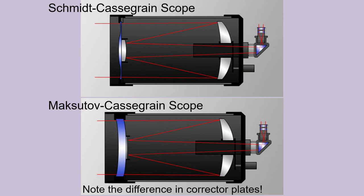Here are cutaway views of a Schmidt-Cassegrain scope and a MAK scope for comparison. The curves in the Schmidt corrector plate are exaggerated in this diagram so you can get a sense of its actual shape — to look at one, you'd just perceive it as being flat. The much thicker corrector plate in the MAK scope becomes a problem for larger apertures, not only because of how heavy it is, but also because of the way it retains heat. It significantly increases the amount of time required for the telescope to cool down and come to thermal equilibrium. Still, with the focal lengths catadioptrics can provide, very large apertures aren't really necessary.